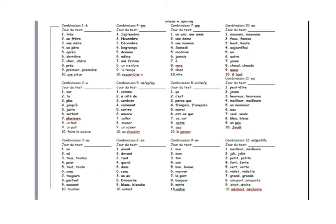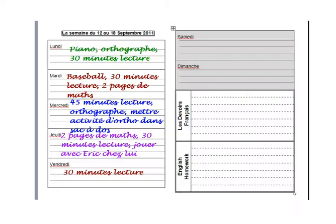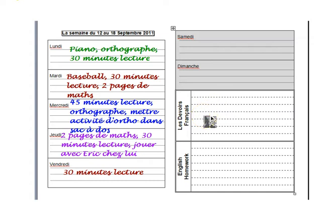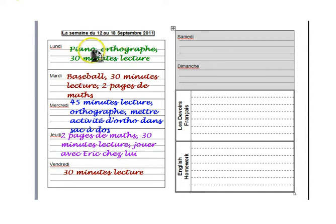These are all the spelling words for this semester, because students will have two agendas — one for each semester of the school year. This is what the agenda looks like inside with every week. We have the days of the week in French. Here is where they will list their homework assignments for the French class. English homework doesn't change much, so usually they don't write it here because English homework is just the spelling and the reading. Students are asked to put activities they do outside of school, like piano lessons, so they can plan their week and see which days they are more available to do more homework.